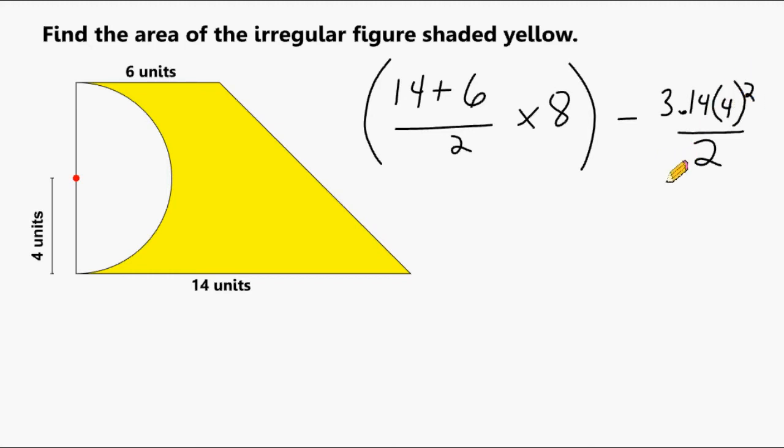All right, so what we're going to do here is just solve everything we have, and that's going to give us what the area of the yellow portion is. We're going to start with 14 plus 6, which is 20, and 20 divided by 2 is 10. And then if we take 10 times 8, that is going to give us 80.